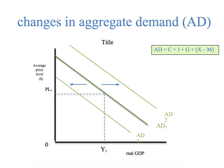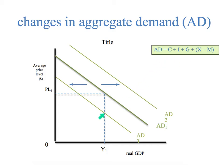For changes in aggregate demand: if the government were to suddenly start spending a lot of money — like the Obama administration starting the national health care program — that was a massive government spending project that pushed aggregate demand out, because people who did not have health care before were now receiving it, and jobs were created. But if one of these components goes down — say consumer spending drops — you're going to have a decrease in aggregate demand. If AD is here and any one of the four components goes up, aggregate demand goes out; if any goes down, aggregate demand goes inward, all things held equal.